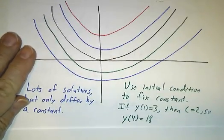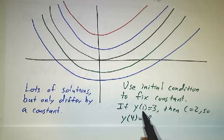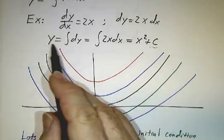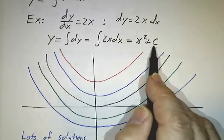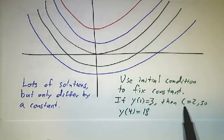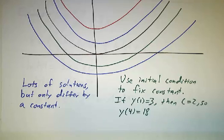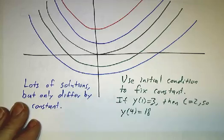And how do you figure out a constant? Well, somebody needs to tell you an initial condition. If, for example, you started off at time 1, y was equal to 3, well, from that you go back and say, well, let's see. When x equals 1, y equals 3, so my constant must be 2. And if the constant is 2, then you can figure out what y is at time 4. So we did a bunch of examples like this back when we were doing antiderivatives and we learned about velocity and acceleration and so on.